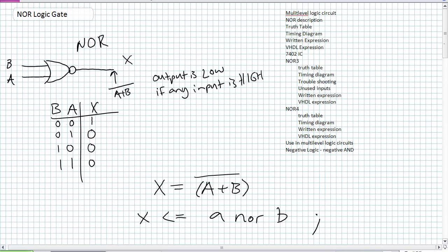The 7402 is the TTL chip for the NOR gate — go ahead and look at that on your data sheets. By now you should be familiar with how those data sheets work. It's the 7402 for a TTL circuit. And you're going to use these a lot, because similar to the NAND gate, the NOR gate can be used as a universal logic element — it can be hooked up in different fashions to make other, even more basic combinations.